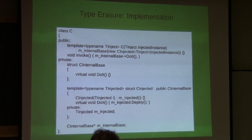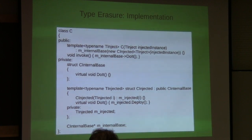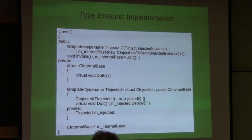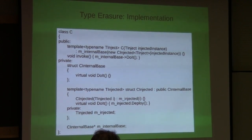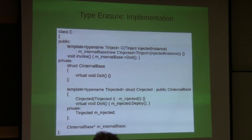There is a limitation to this technique - you have to agree on the interface beforehand at compile time. In my particular example, the only thing I'm able to do with my injected class is call deploy. That is a limitation of type erasure. The question was: the only thing I can do is execute deploy on the injected instance - and that's exactly correct. You have to agree on the interface beforehand at compile time.